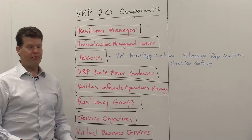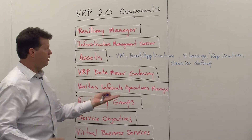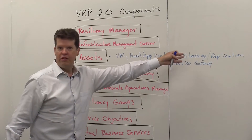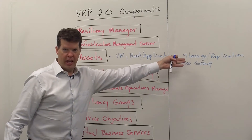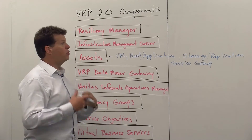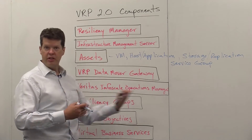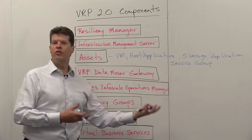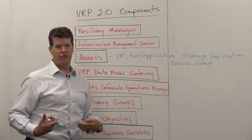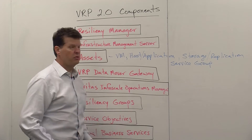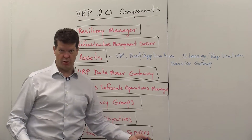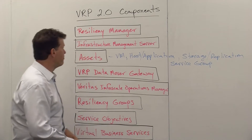It also manages storage and replication, as well as service groups in VCS environments — service groups that are running in a global cluster between two data centers. We're going from the Resiliency Manager through the Infrastructure Manager, connected to specific assets, and initiating actions: starts, stops, role reversals, and replications. We can do migrations between sites, takeovers from one site to another, and rehearsal operations for testing purposes.